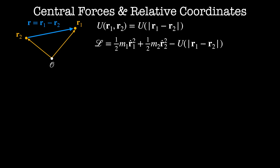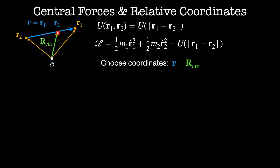In these coordinates, the Lagrangian is given by one-half m1 r1-dot squared plus one-half m2 r2-dot squared minus the potential energy. Remember, we're free to choose any coordinates we'd like with Lagrangian systems, so perhaps another set of coordinates would be better. Let's try the separation between these two particles r as one of our coordinates and the center of mass of the two particles rcm as the other coordinate. One nice thing about these coordinates is that they no longer depend on our choice of origin.